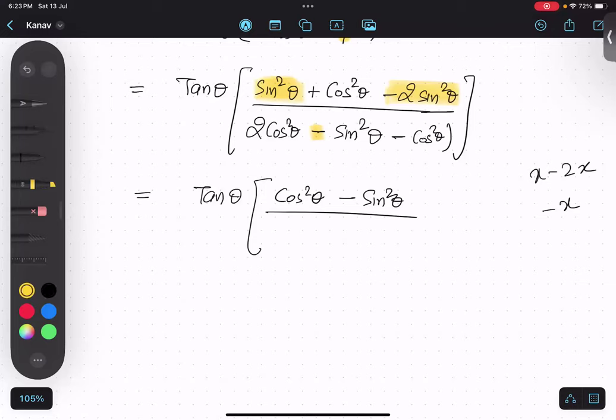Okay, denominator also. See, 2 cos square theta minus cos square theta. So what will happen? So only cos square theta. Minus sin square theta, minus sin square theta cancel. Exactly.